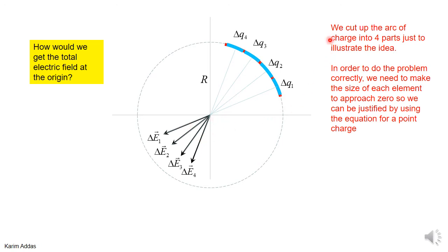Remember we cut this arc into four parts only to illustrate the idea. If you want to do the problem correctly, you need to make the size of each element approach zero so that we are justified in using the equation for a point charge. When you add vectors, you have to add the x-components together and the y-components together.